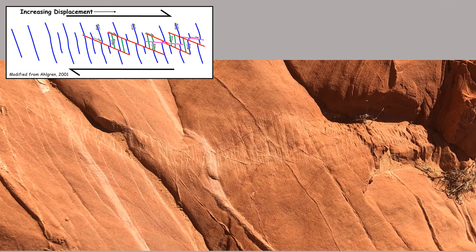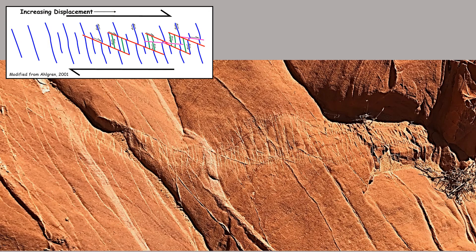Here's a nice example of a different shear zone where you have increasing displacement as you move to the right. If I edit this image a bit I can kind of pull out those deformation bands. Over here on the left you primarily have just those initial blue bands that are shown here in this diagram.